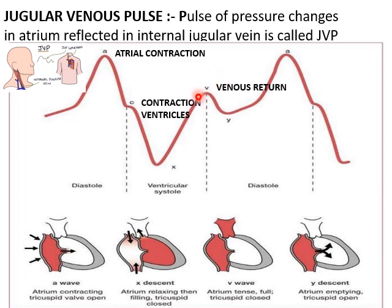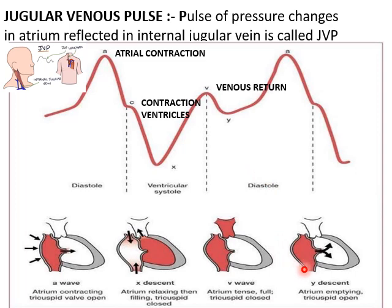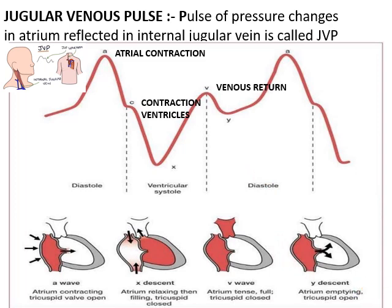A stands for atrial contraction; C stands for contraction of the ventricles; and V represents venous return. There are two descents: X descent, due to ventricular systole, and Y descent, which occurs during ventricular diastole due to the atrium emptying at the time of opening of the tricuspid valve.